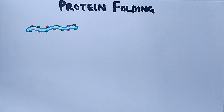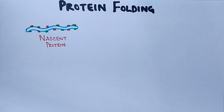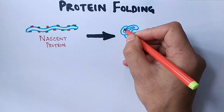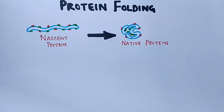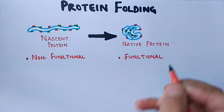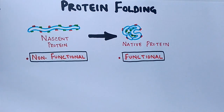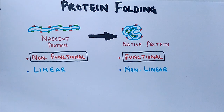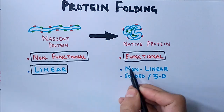In the protein folding process, the nascent protein is transformed into a final form called the native protein. The nascent protein is non-functional and arranged in a linear, one-dimensional fashion, while the native protein is functional, non-linear, and three-dimensional in nature.